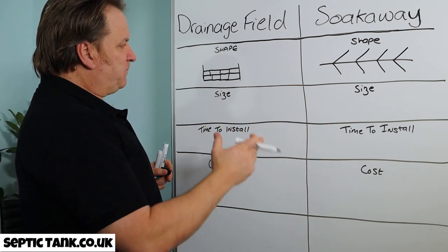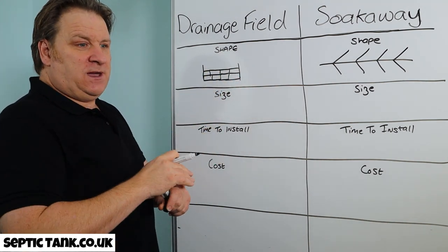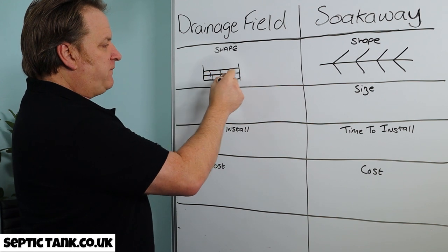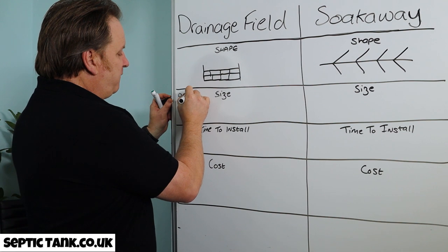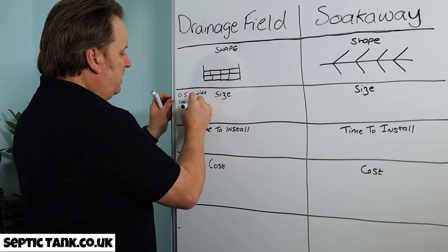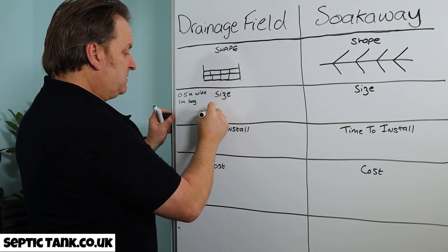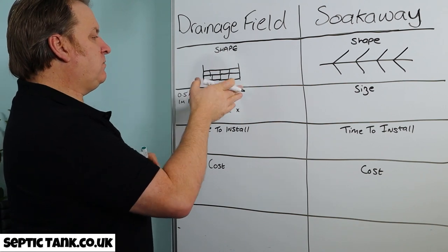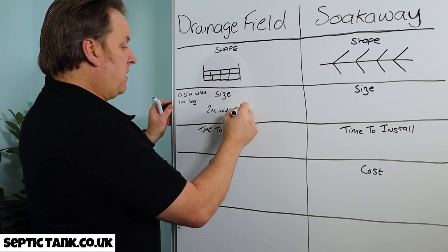What about the size? Well, these are quite small holes, because with drainage field crates the liquid is contained within the crate. Width wise, the drainage field crates themselves are 0.5 meters wide and one meter long. So in this instance, if they're four wide, that's two meters wide, and with two stacked on top of each other, you're looking at one meter long overall.